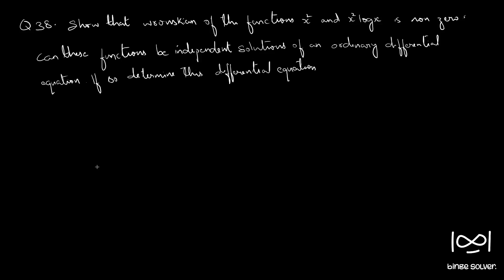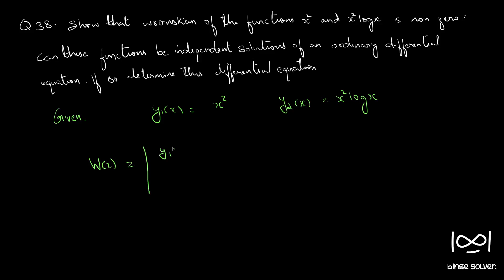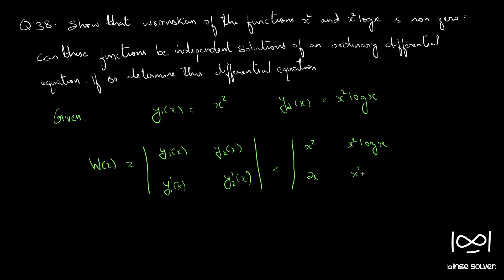Given y1(x) = x² and y2(x) = x²log(x). The Wronskian is defined as the determinant with entries y1, y2 in the first row and y1', y2' in the second row. So this becomes x², x²log(x), 2x, and x²·(1/x) + 2x·log(x).